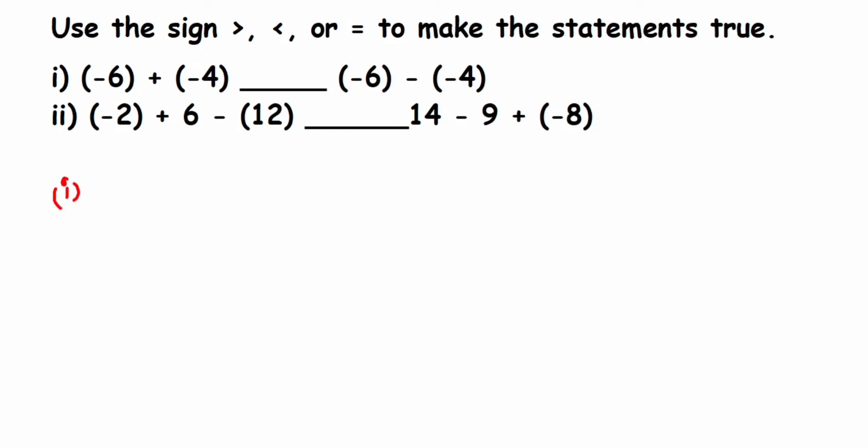So we're going to solve the first one. In the LHS we have (-6) + (-4). This is like you're adding two different negative numbers. Minus and minus, whenever you have two numbers with the same negative sign, you have to add them. So 6 plus 4 is 10, but the negative sign will be there.